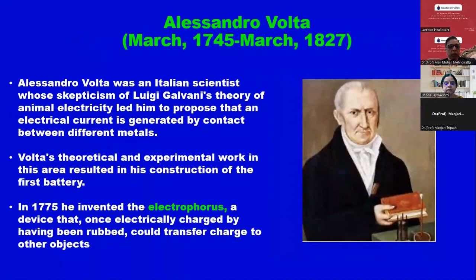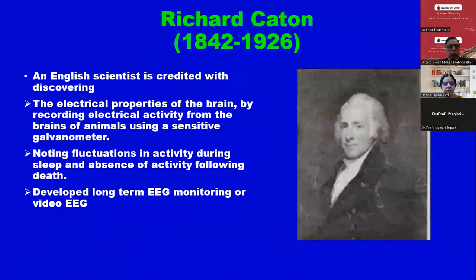Then came Alessandro Volta. We know the voltmeter — he was an Italian who devised the voltmeter and invented the electrophorus, a device that once electrically charged was found to have current. Then comes an English scientist credited with discovering electrical activities of the brain by recording electrical activity from the brain of an animal using a sensitive galvanometer. The galvanometer had arrived; now they could record it.